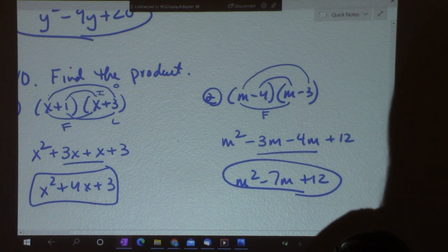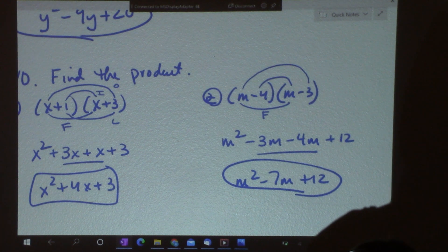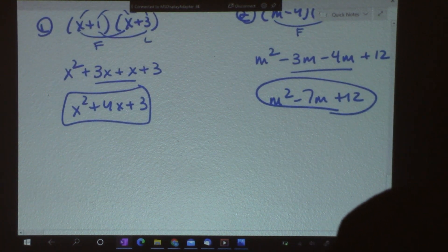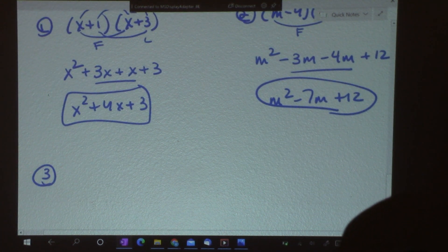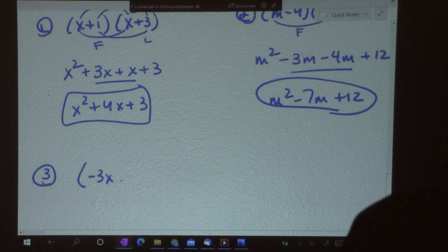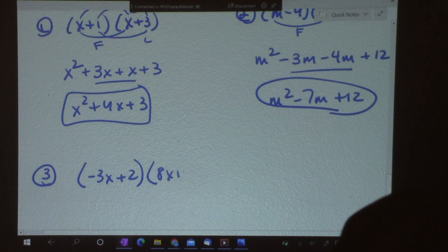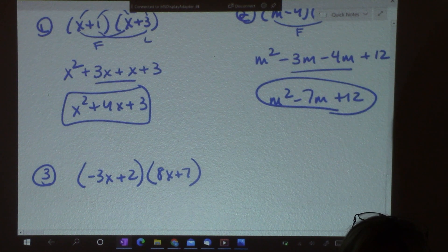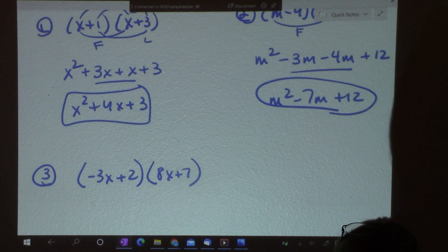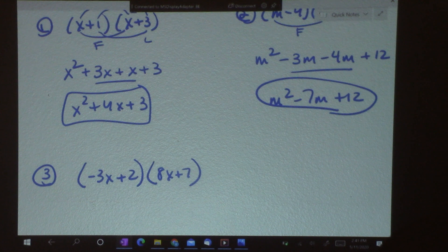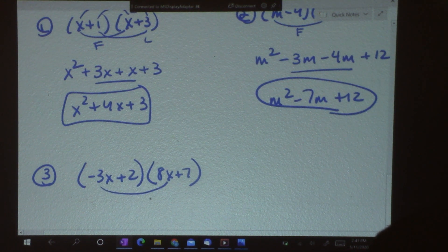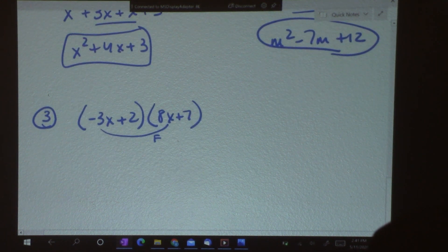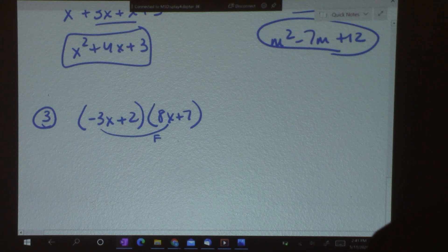Now, they're going to get a little harder. You don't always just have a single variable in your binomials. Sometimes, you'll have a negative, and sometimes, you'll have a number, like this. And FOIL still works. You just get more than x squared. You'll have a coefficient in the front for an answer. So, let's do the same thing. It's just a little bit harder. Negative 3x times 8x is negative 24x squared.